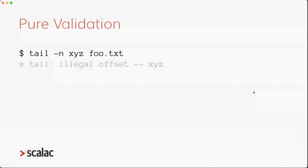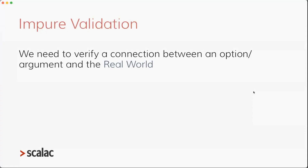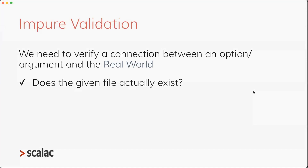For example, here I'm calling the 'tail' command with an illegal offset — the '-n' option should be an integer, but the user is providing an invalid string. So we should get an error like 'illegal offset'. There is also impure validation, which happens when we need to verify a connection between an option or argument and the real world — for example, does the given file actually exist? Or is the given URL valid? So I have this tail command example where I'm trying to call it with a file that does not exist, and the CLI app should give us a nice error message.